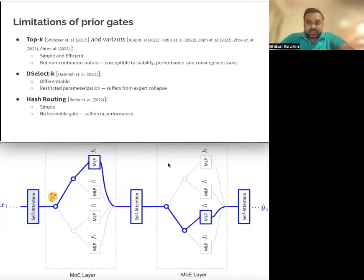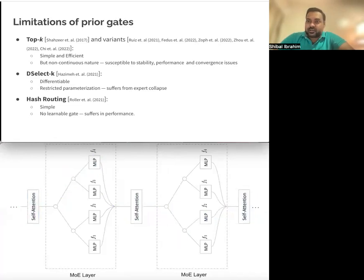There is also deselect-k, which is a differentiable way to learn routing. Its restricted parameterization can lead to expert collapse in some cases. Then there are other randomized routing strategies, which are simple, but there's no learnable gate as such, so they do suffer in performance.